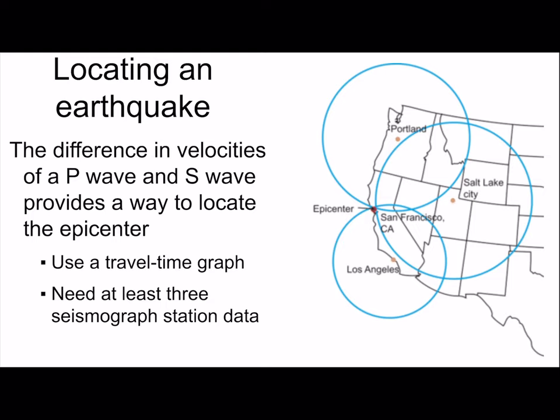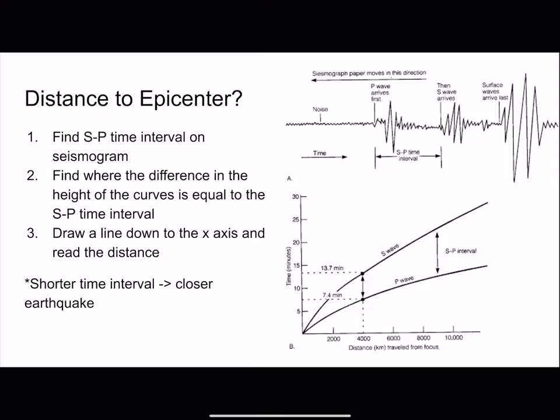Adding a third measurement nails down the location. This process is called triangulation, and a similar idea is used by GPS systems to locate where you are based on the time taken for microwaves to travel to and from satellites. If waves moved at constant speed, the distance calculation would be very easy. Unfortunately, as earthquake waves get farther from the epicenter, they dissipate their energy and slow down. So in order to calculate the distance, we need to use a travel time graph. But before that, we must first read the seismogram.